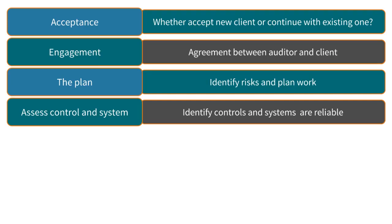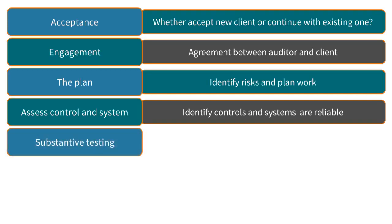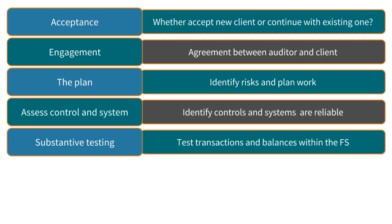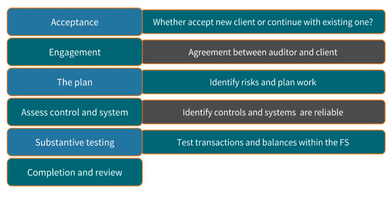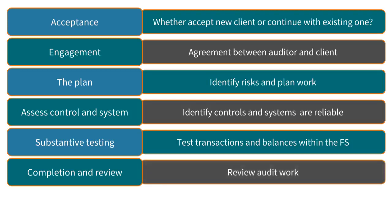Step 5: Substantive Testing. This is the testing stage where the auditor performs audit procedures on transactions and balances within the financial statements to identify potential misstatements. Step 6: Completion and Review. At this stage, the audit manager will review the evidence collected and the work completed to ensure it is enough to form an opinion.